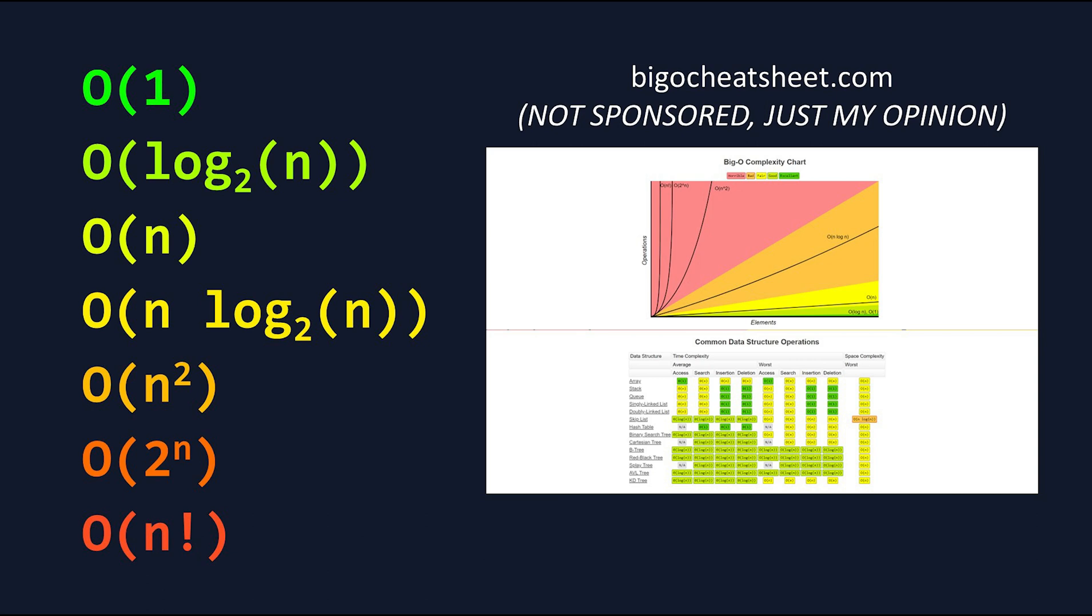Now let's take a look at an example to better understand why Big O is important. Let's say you were building a project where you were analyzing 10 elements, and your two available algorithms had runtime complexities of O(log₂(n)) and O(n).